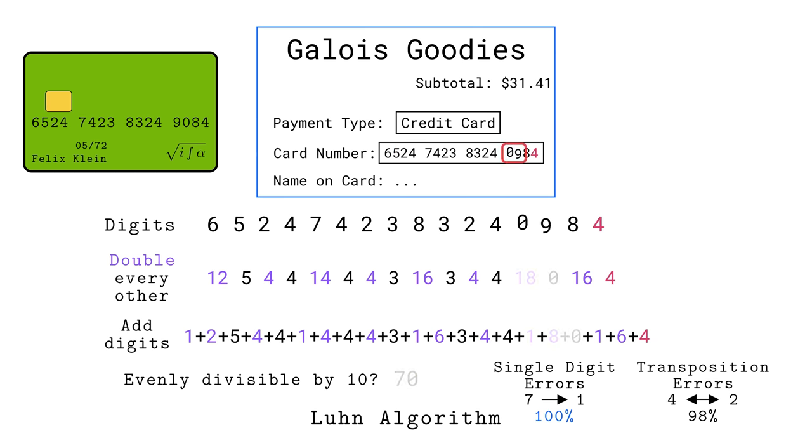However, if a customer transposes this 9 and 0, the algorithm produces the same sum, so it incorrectly passes. The customer now has to wait several seconds for the online store to tell them about their mistake. That flaw is particularly irksome because of how close 9 and 0 are on a typical keyboard.